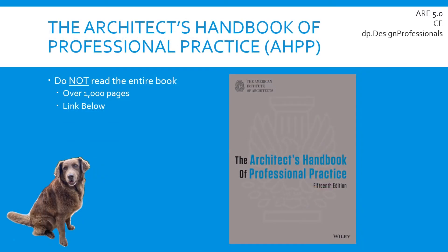The first resource we want to look at is the Architect's Handbook of Professional Practice. This is one of the most important and useful books to purchase because it is used in every single exam of the ARE, so it will be well worth your money. I like to give the warning that this book is over a thousand pages long, but you do not by any means have to read the entire book. It's a waste of your time and you won't retain the necessary information if you're just trying to study for the CE test.